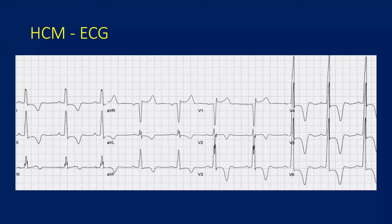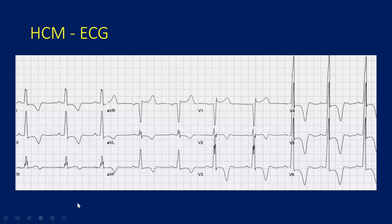Some of the ECG findings in HCM can be quite abnormal. This is one of the typical findings. So in sinus rhythm, we have this profound LVH with large QRS complexes in the lateral leads and very abnormal, sharp T-wave inversion. This ECG finding is consistent with apical hypertrophic cardiomyopathy — you have to rule out other causes like ischemia and intracranial abnormalities, but this is the classic Yamaguchi ECG for apical HCM.